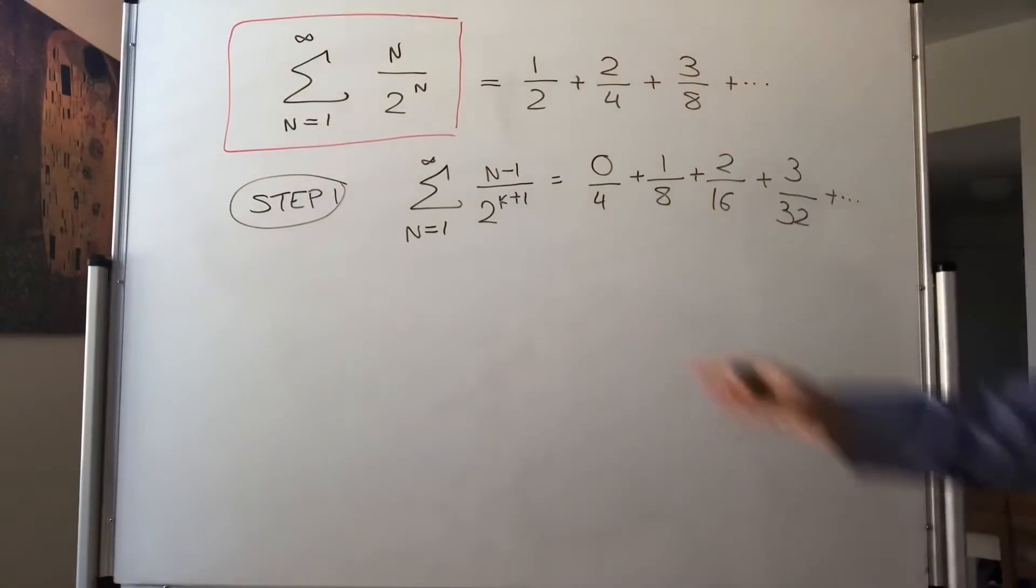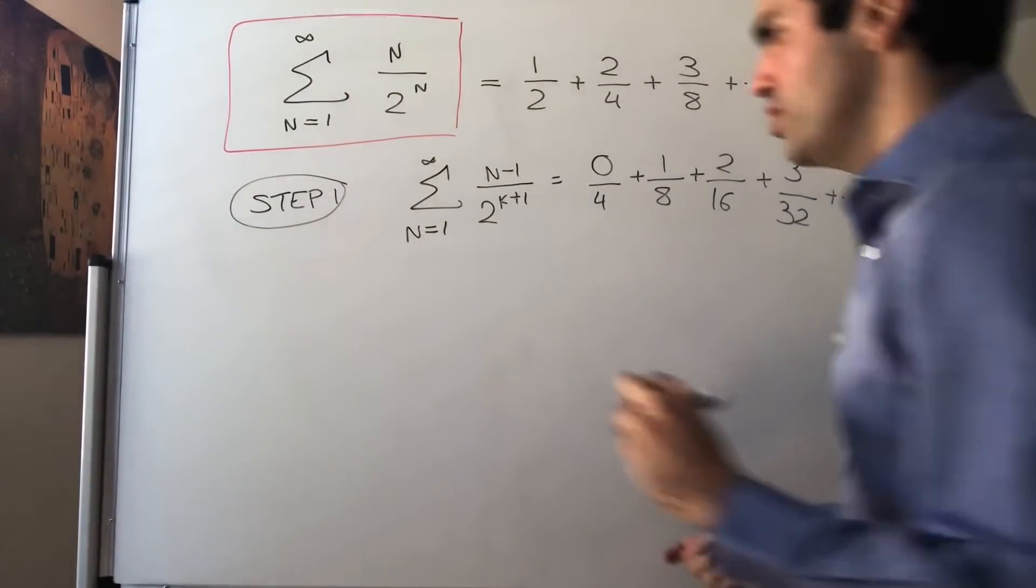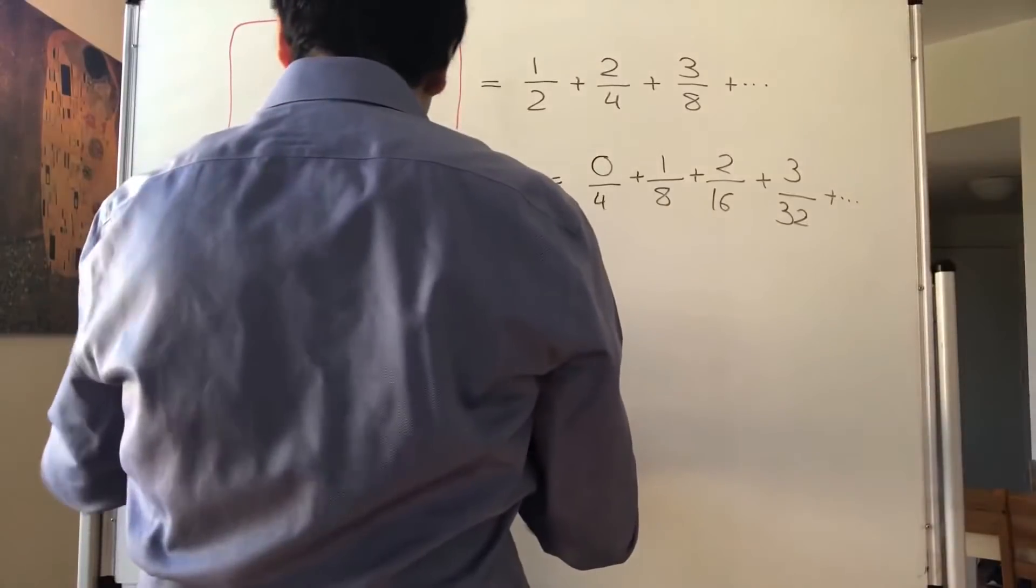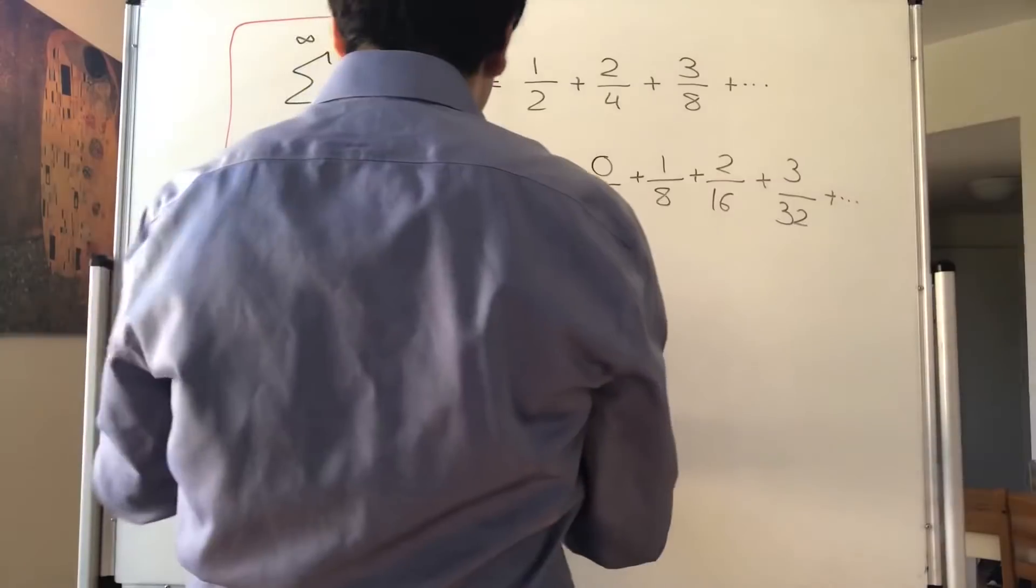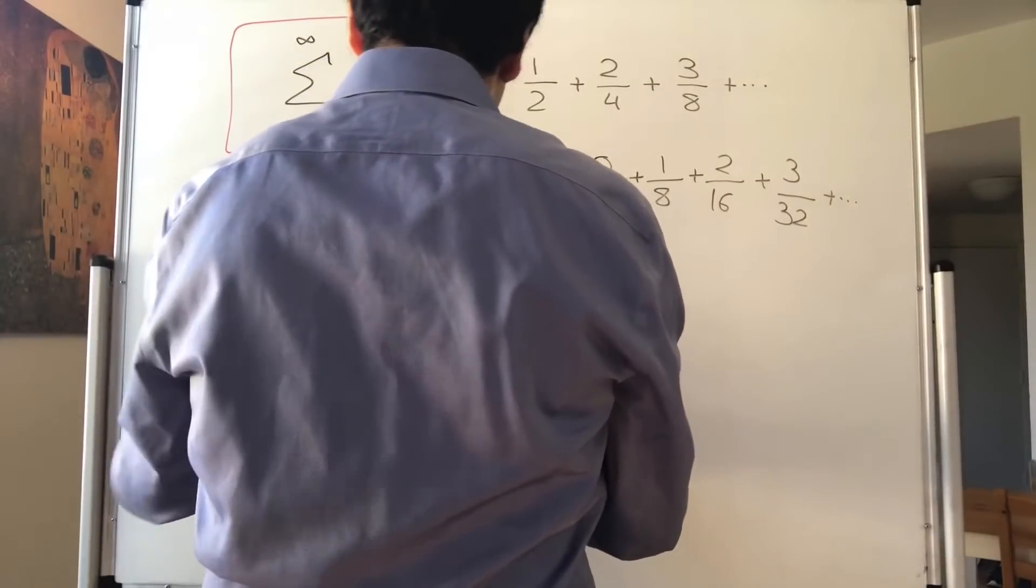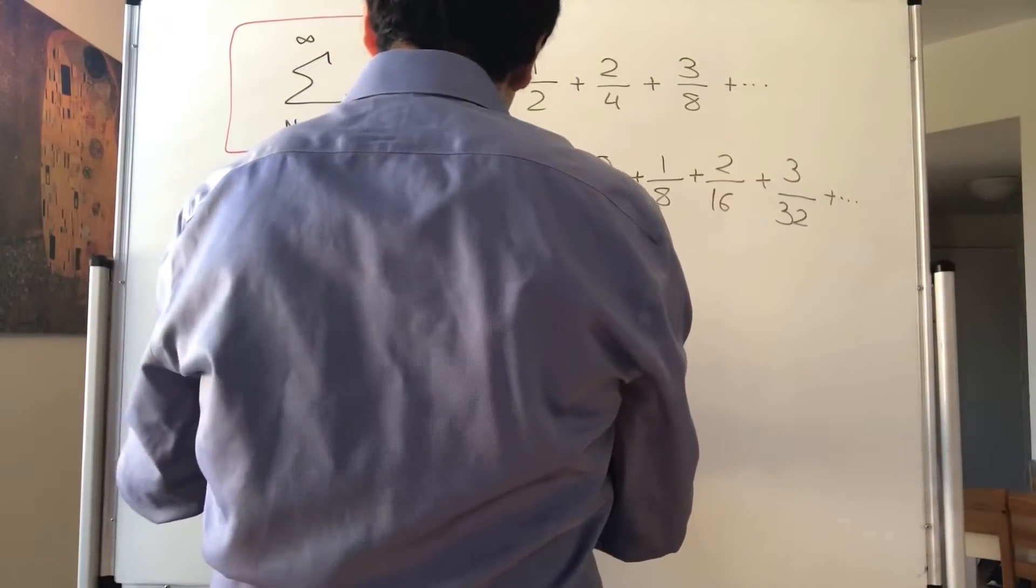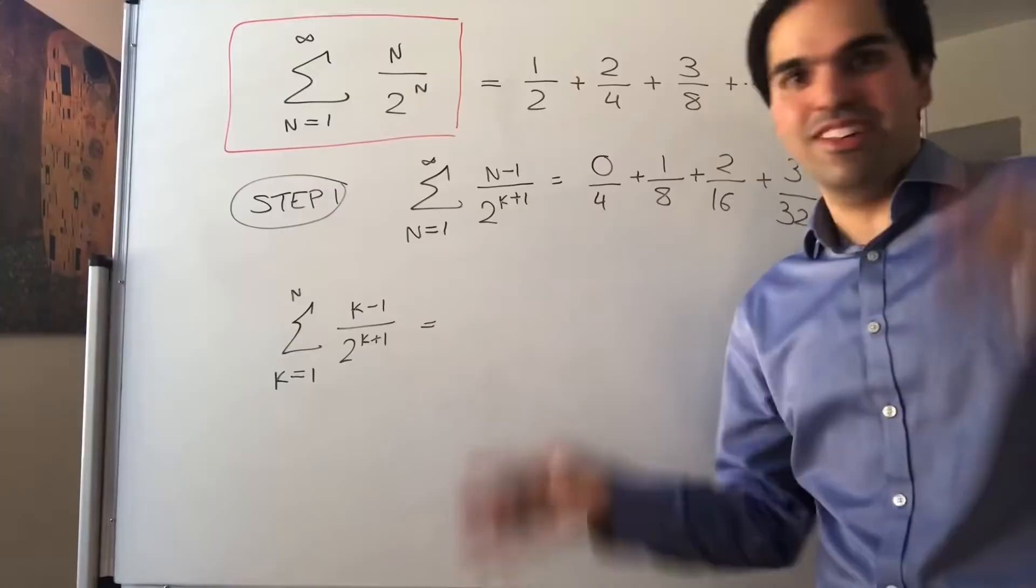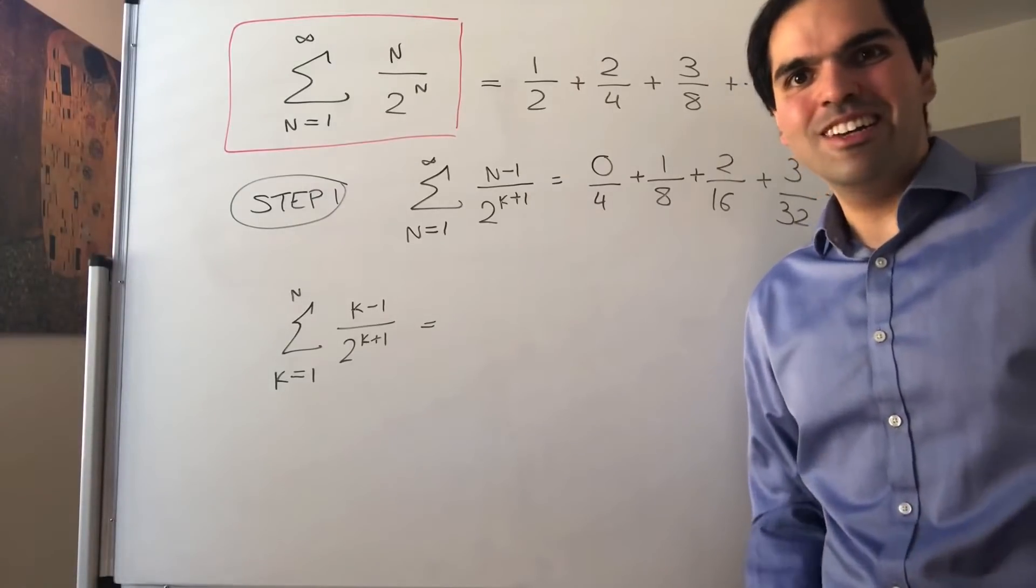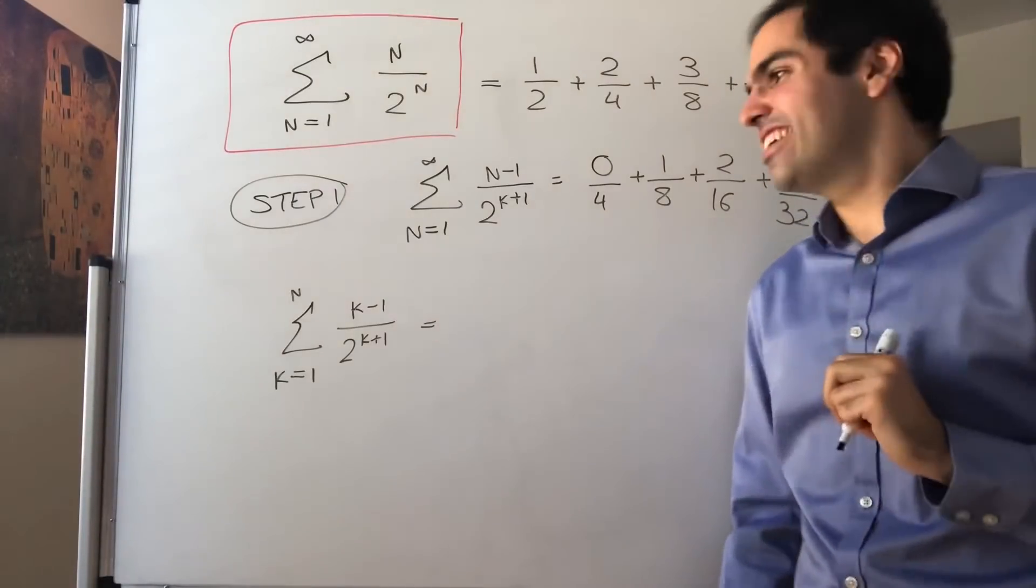And let's do that rigorously. So let's calculate the partial sums. So let's calculate the sum from k equals 1 to n of k minus 1 over 2 to the k plus 1. Now, let's do a little trick that you're like, there's no way it's going to work, but it is going to work.